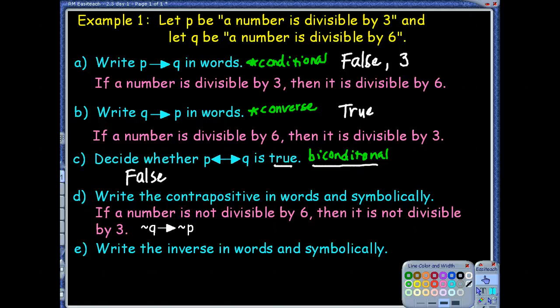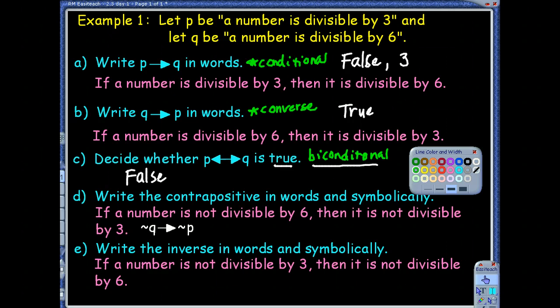All right. Okay. Inverse. Now I'm on it. You're on it. Let's do it. Let's do it. I want to negate the conditional statement. So if a number is not divisible by three, then it is not divisible by six. Yay. All right. Now, for my symbols, this one is the not P, then not Q. You got it. Nice work.